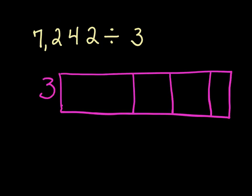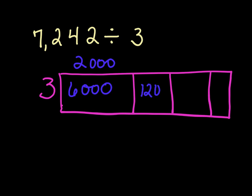In this next problem, we have 7,242 divided by 3, and we're going to use an area model to divide. We first look at that 7,000. We need to ask ourselves, is there anything that 3 times what gives us 7,000? Nothing. So what could we change that 1,000 to that 3 can go into evenly? Well, we could say 6,000, because 3 times 2,000 equals 6,000. So once we take 6,000 and subtract it from 7,000, we're left with 1,000, and we're going to add it on with the 200, which gives us 1,200.